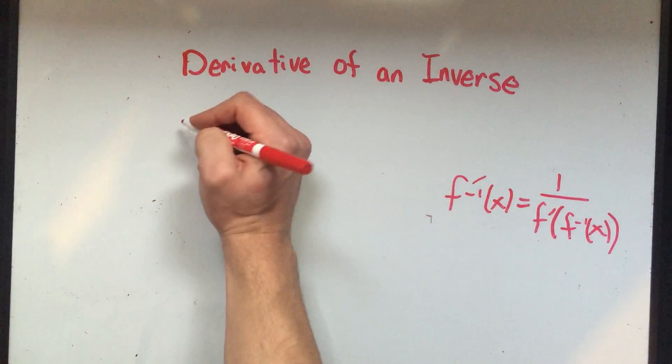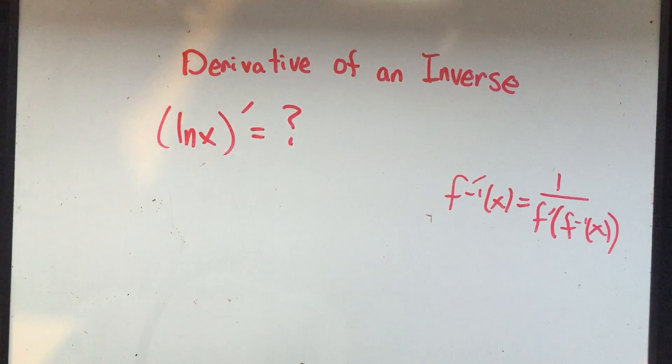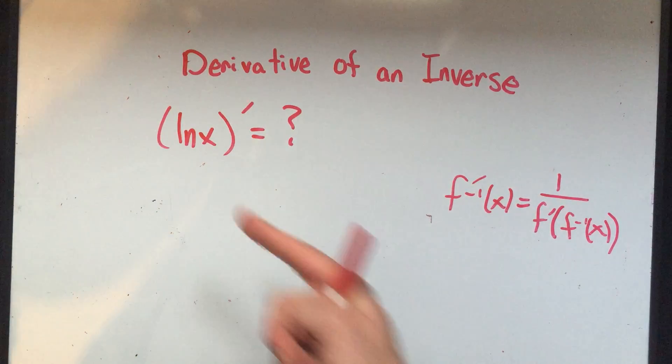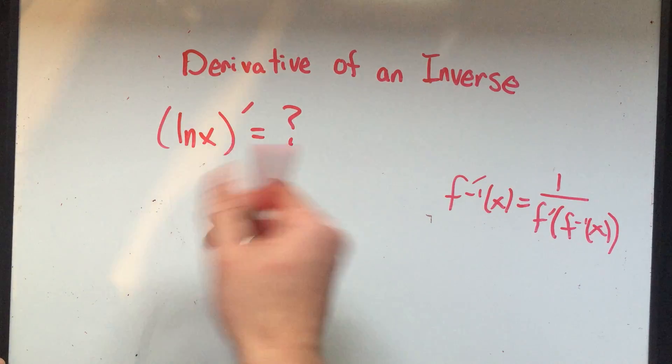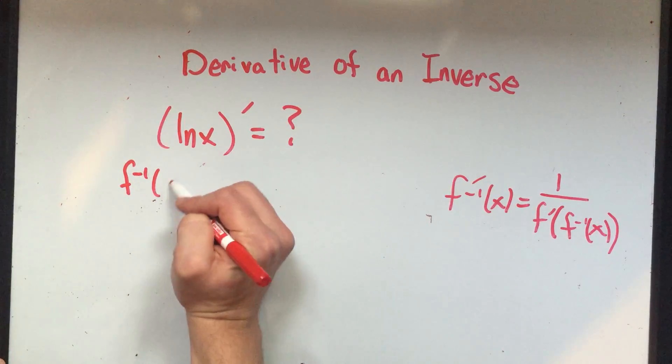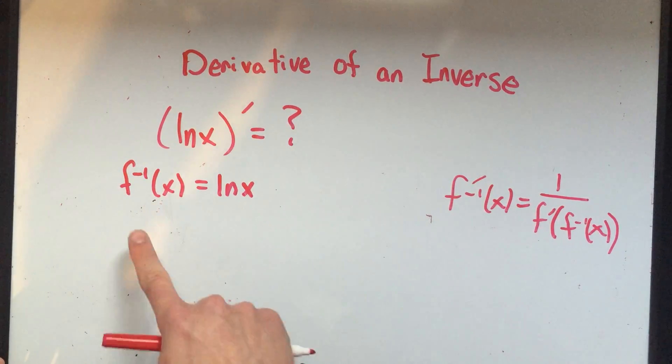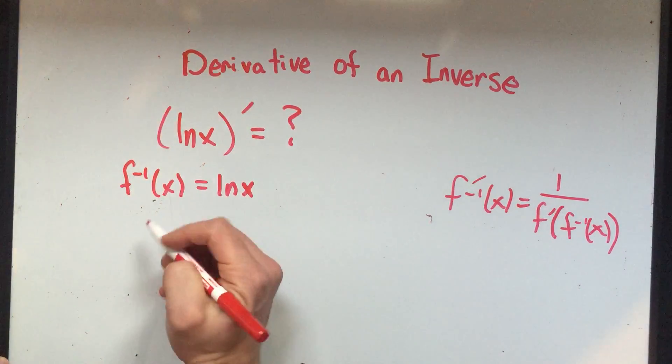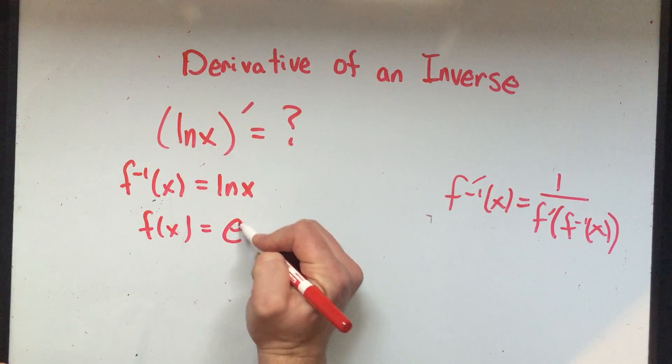I want to know, what's the derivative of ln of x? Like I said at the beginning, there's no power rule for this, there's no chain rule. It's just that ln x is the inverse of something. So what is ln of x? I'm going to call ln of x the inverse function. ln x is the inverse function of what? If you remember from algebra, ln x is the inverse function of e to the x.